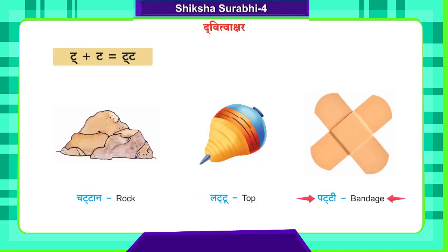Then patti — patti is bandage. When we get some wound, we apply this bandage. So you have to practice these double letters. Good.